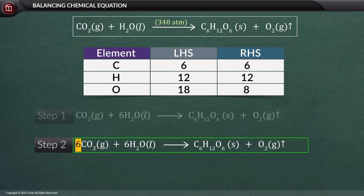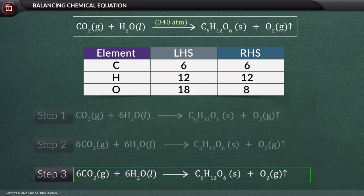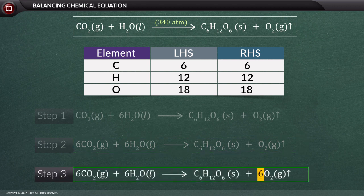Putting 6 in front of CO₂ increases the number of oxygen atoms on the LHS. Thus we balance the number of O atoms on the LHS. The whole equation becomes: 6CO₂(g) + 6H₂O(l) → C₆H₁₂O₆(s) + 6O₂(g). That is why there is a need to cross-check the equation at the end.